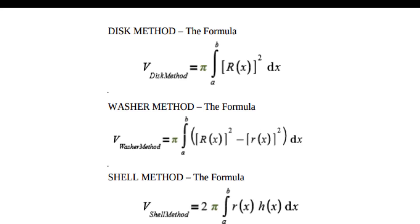Finally, the volume of solids — you should know three methods and their formulas. The disk method: V = π times the integral from a to b of [R(x)]² dx. The washer method: V = π times the integral from a to b of [R(x)² − r(x)²] dx. The shell method: V = 2π times the integral from a to b of x·h(x) dx. These formulas require a lot of practice — I can link Khan Academy practice below.